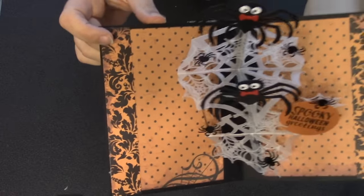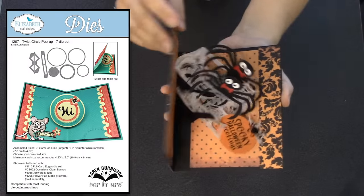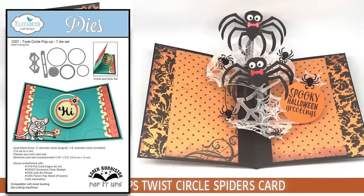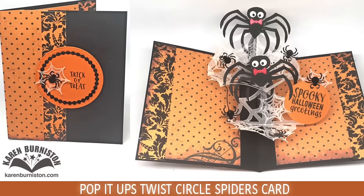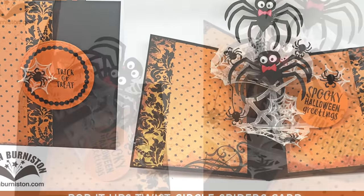This is a technique video where I'm going to take the twist circle pop-up die and modify it a little bit so that it actually allows for two shapes to pop up at the same time. In my case those two shapes are spider webs, and I'm doing this as a Halloween card for our September designer challenge.